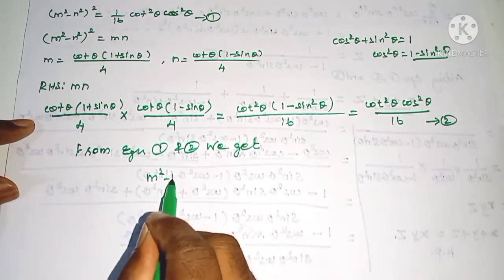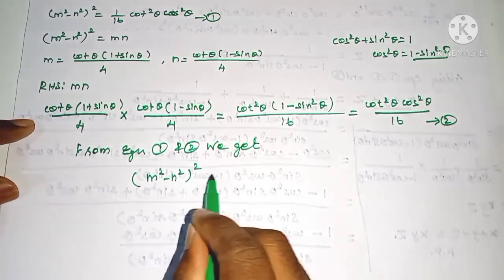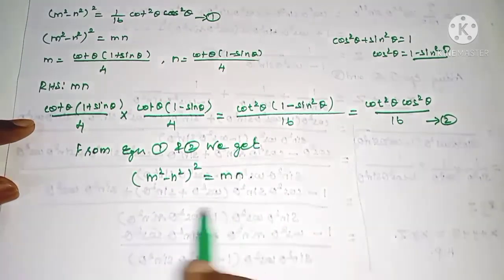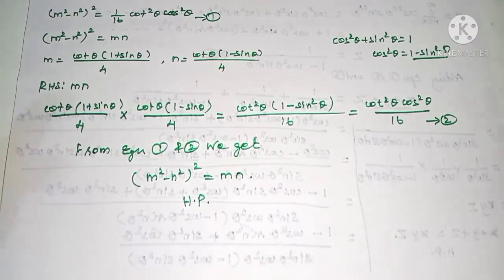Therefore, (m² - n²)² is equal to m into n. Hence proved. Thank you.